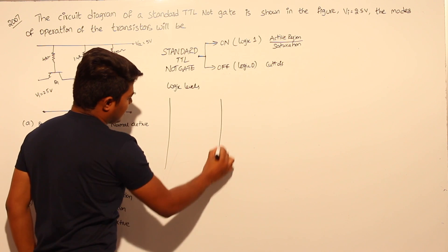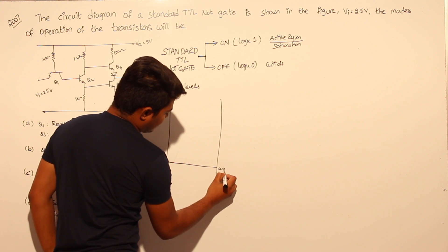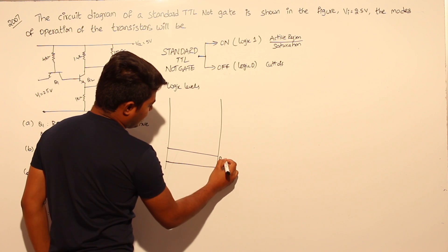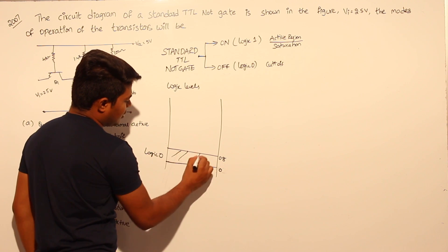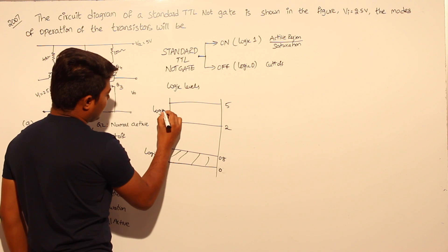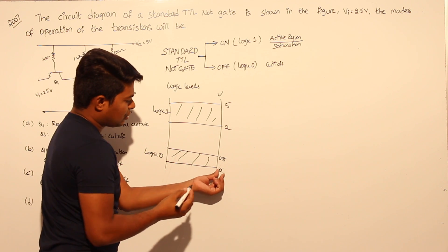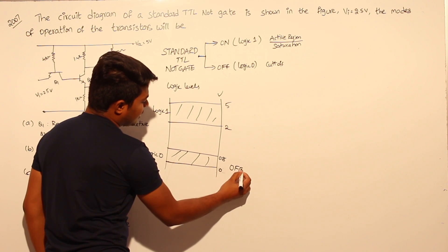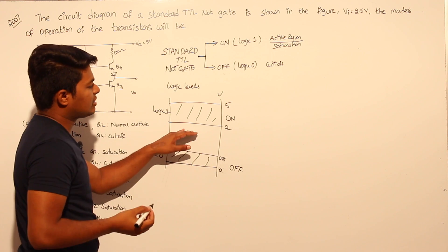Looking at the logic level diagram: from 0 to 0.8 volts is called logic 0, and the transistor is in the off state. From 2 to 5 volts is called logic 1, and the transistor is in the on state. These are the voltage ranges for the TTL logic levels.